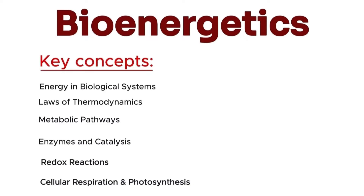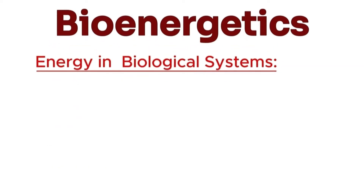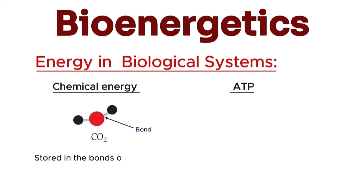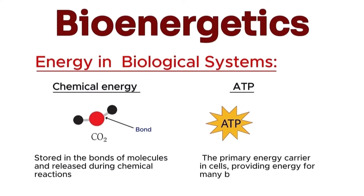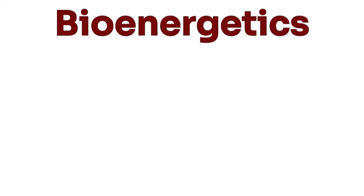Energy in biological systems is present in the form of chemical energy and ATP. Chemical energy is stored in the bonds of molecules and released during chemical reactions. ATP, or adenosine triphosphate, is the primary energy carrier in cells, providing energy for many biological processes.